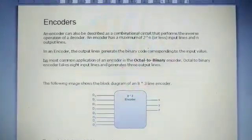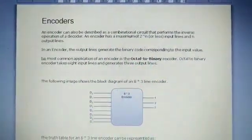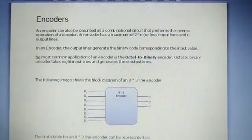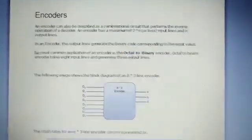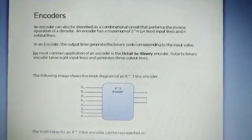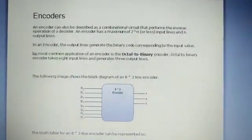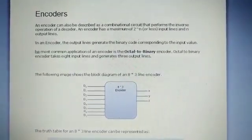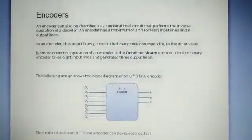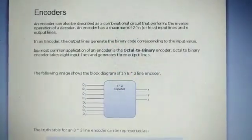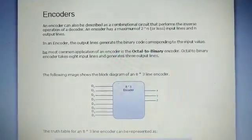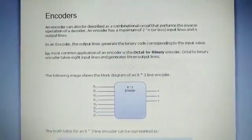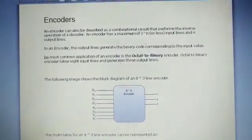It has n input lines, only one of which is activated at any time, and m output lines. It encodes one of the activated inputs to a coded binary output with m bits. In an encoder, the number of outputs is less than the number of inputs.